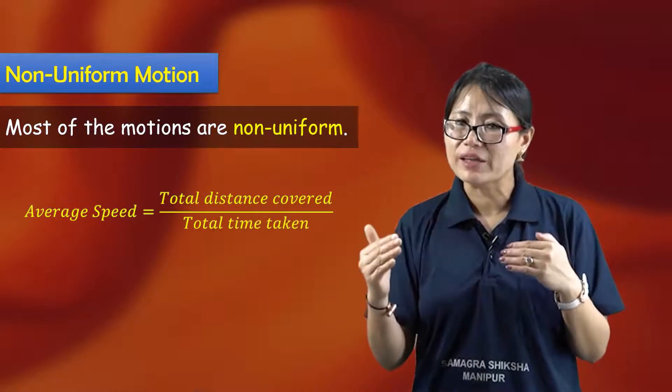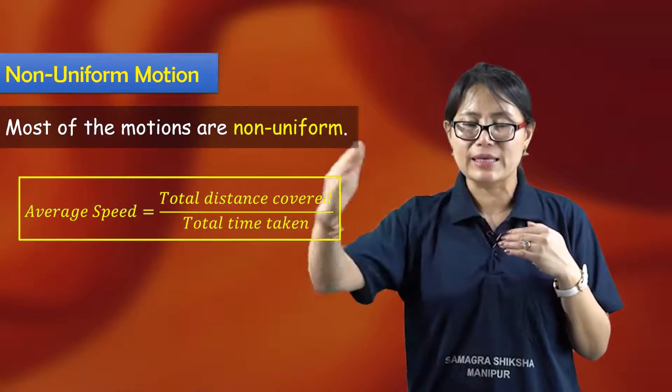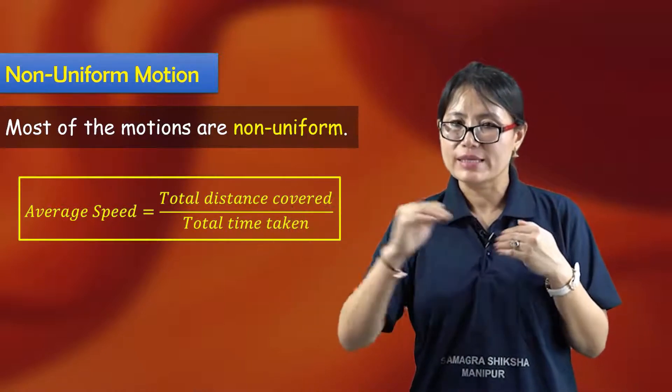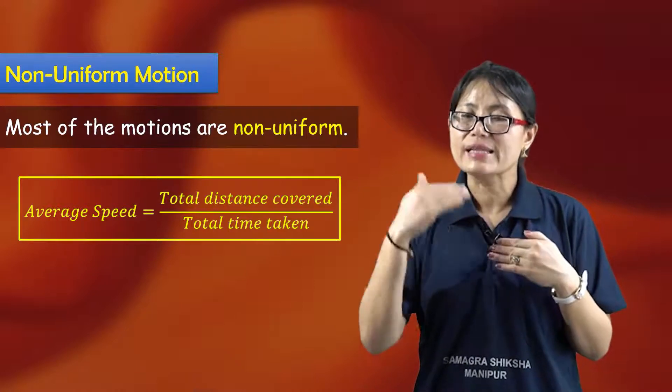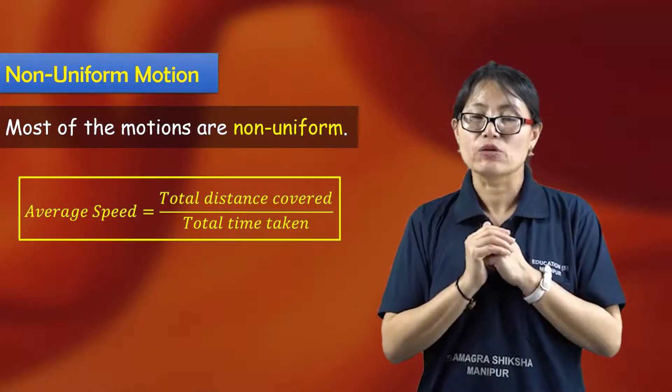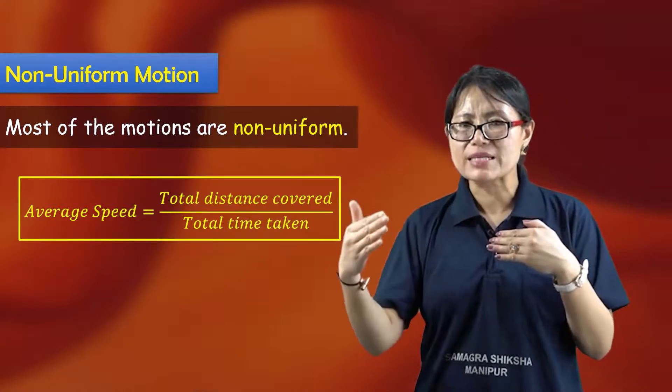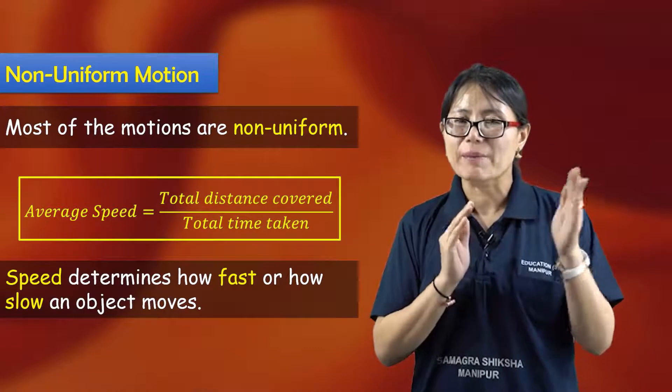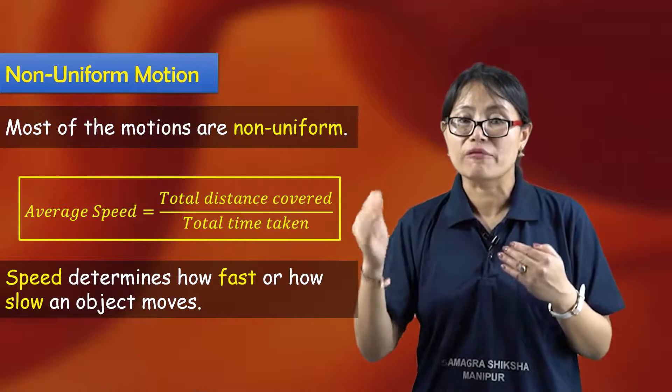When motion is non-uniform, speed varies - sometimes fast, sometimes slow. In such cases, we calculate average speed. Average speed is the total distance covered by the object divided by total time taken. Speed determines how fast or how slow the object moves.